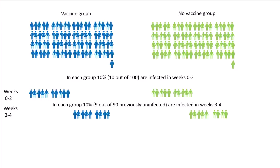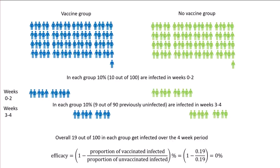Overall, 19 out of 100 in each group get infected over the four-week period, and efficacy — which is defined as one minus the proportion of vaccinated infected over the proportion of unvaccinated infected, as a percentage — is just 0%.